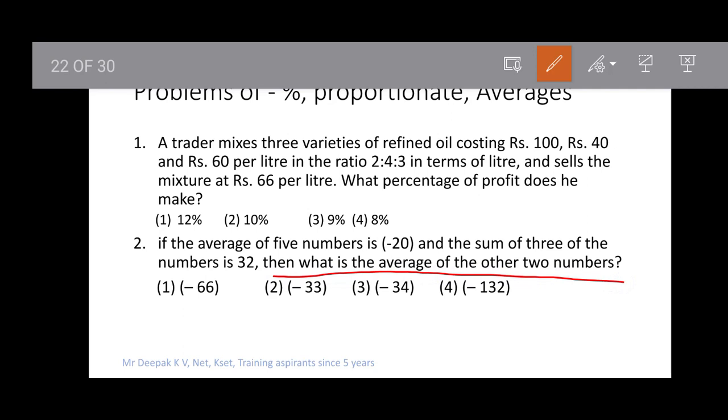The average of 5 numbers is -20. Average equals sum divided by n, so the sum of all 5 numbers is -20×5 = -100. Let x be the sum of the other 2 numbers. So 32 + x = -100.